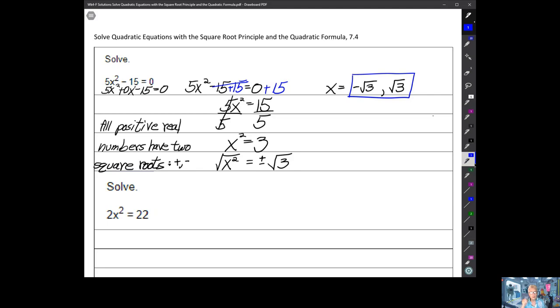So to get x I have to take the square root of x². So I can undo the squaring. And of course I have to take the square root of the other side. And because all positive real numbers have two square roots, a positive square root and a negative square root, I have to acknowledge that fact right here.